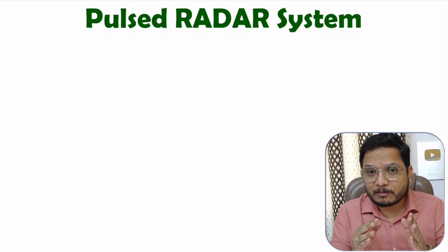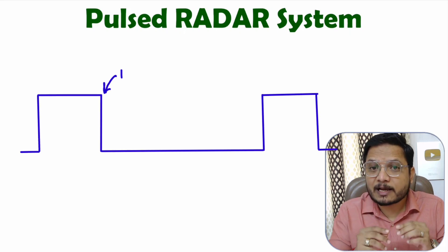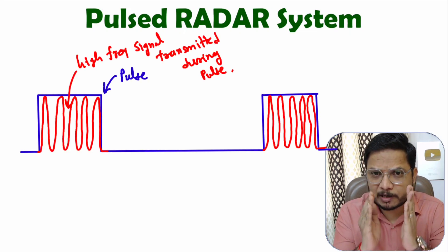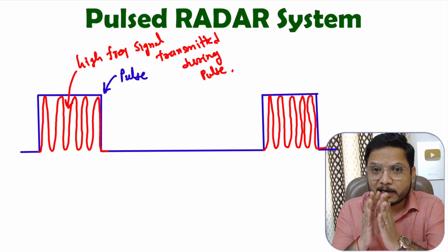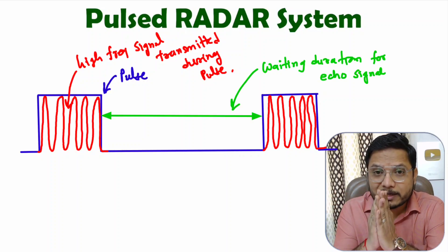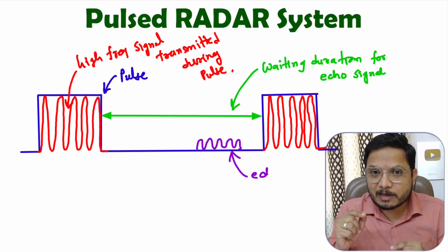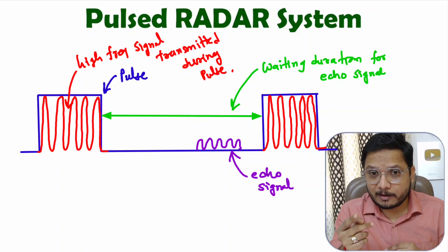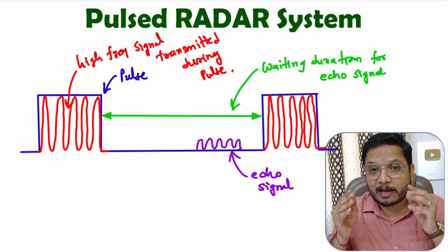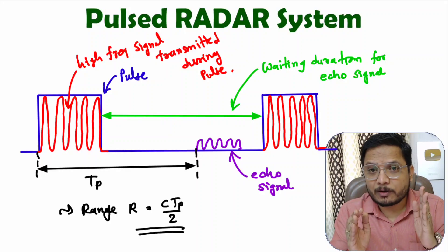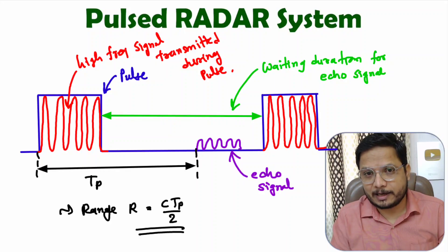The pulsed radar system transmits a high frequency EM wave for a short duration of pulse. After that it has a waiting duration. During that waiting duration it receives the reflected echo signal from the target, and by comparing the transmitted wave and the reflected received wave it identifies the range of the target.